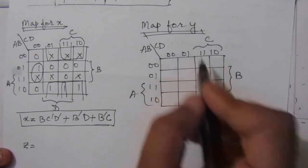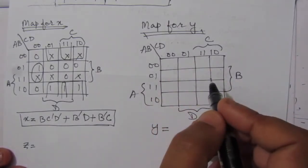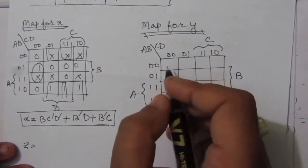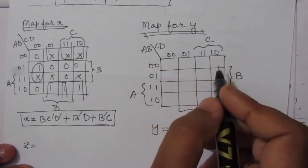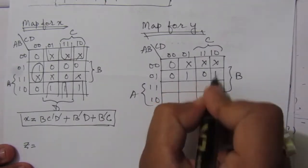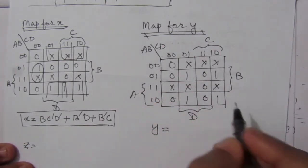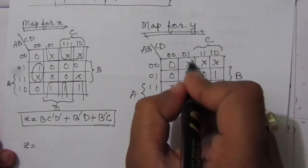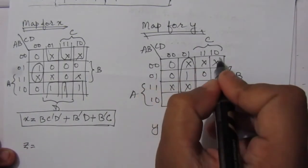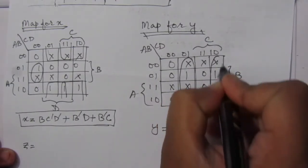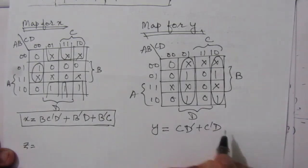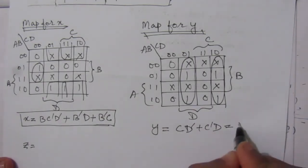For the K-map for Y, we follow the same process and directly fill in the values. Covering all the 1-values, we can combine two pairs. This gives us: Y = CD̄ + C̄D, which is nothing but C XOR D.